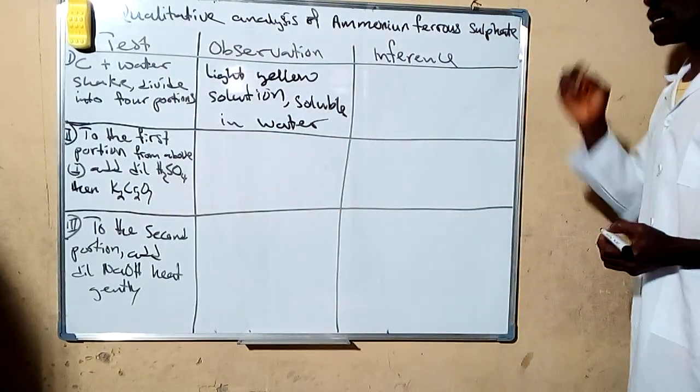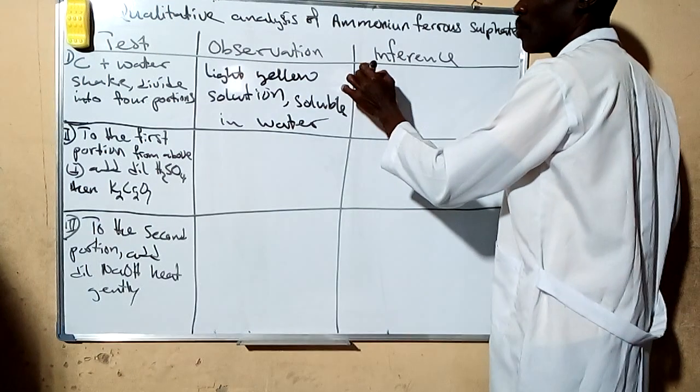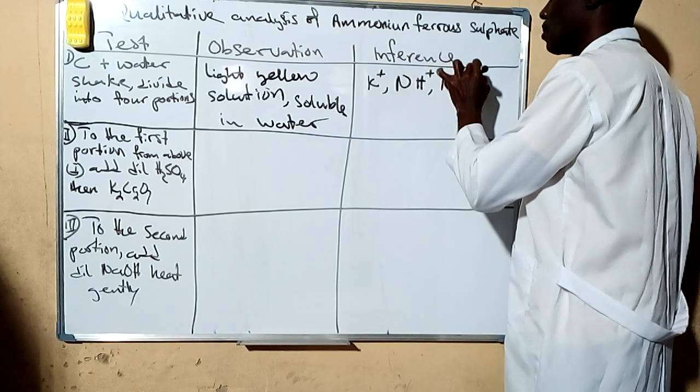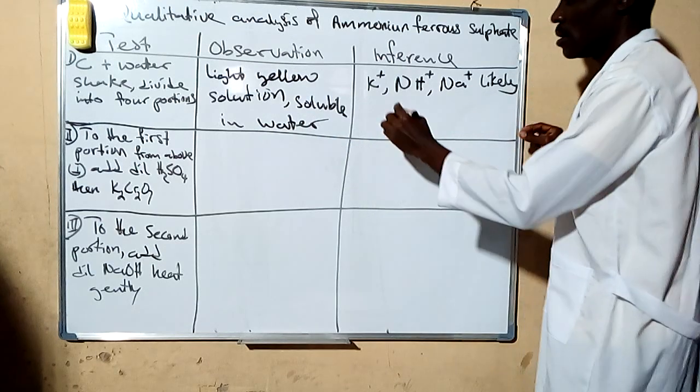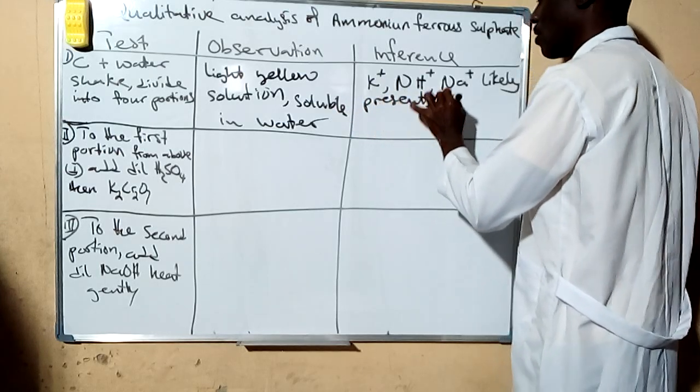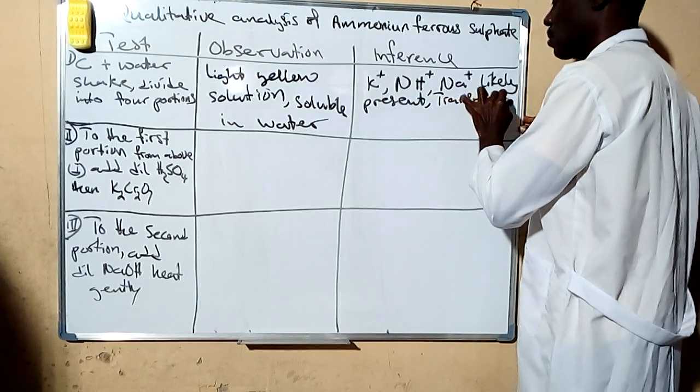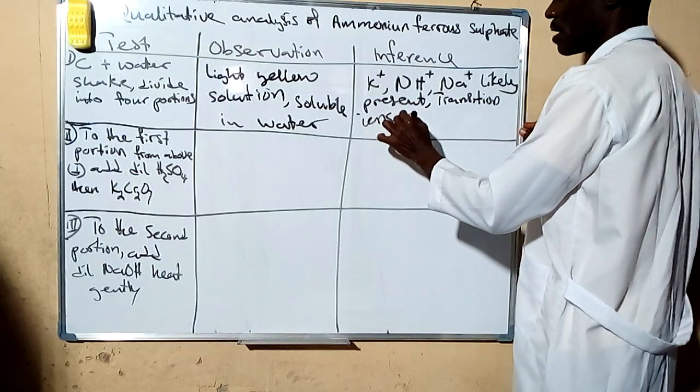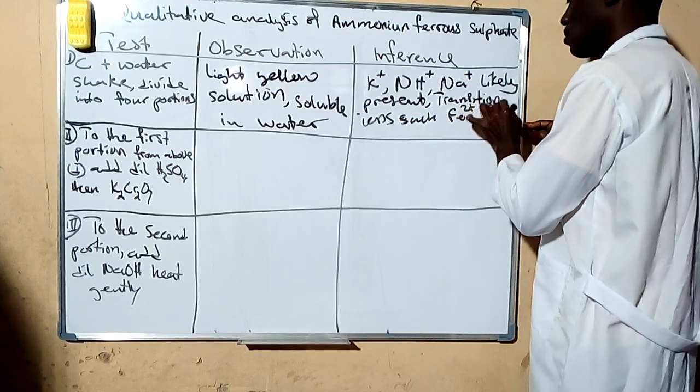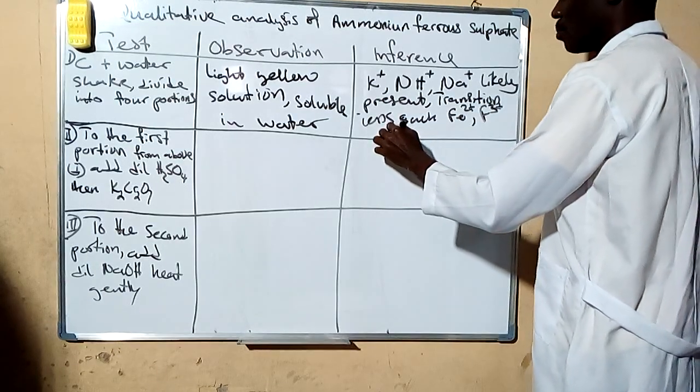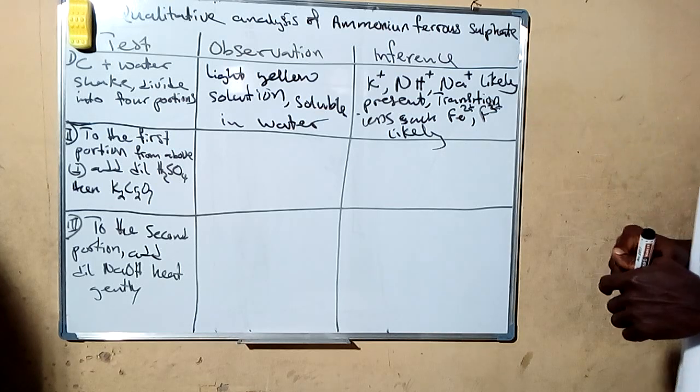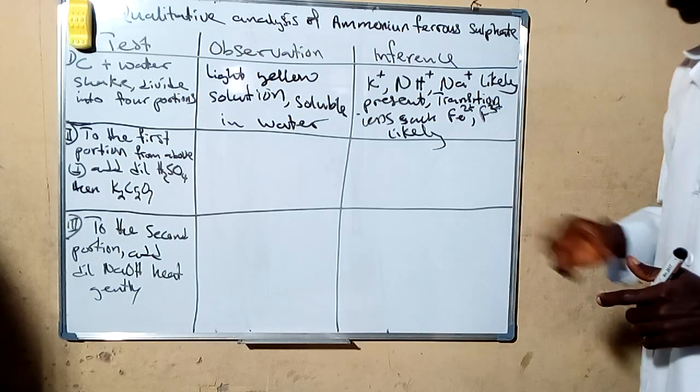Since it's soluble in water, it means that the soluble ions of ammonia and perhaps sodium are likely to be present. Being colored means that transition ions also are likely to be there, such as iron 2 and iron 3, because colored ions is one of the characteristics of transition elements due to their D group.